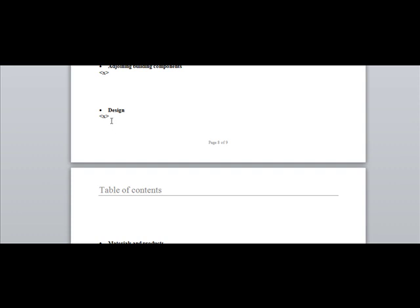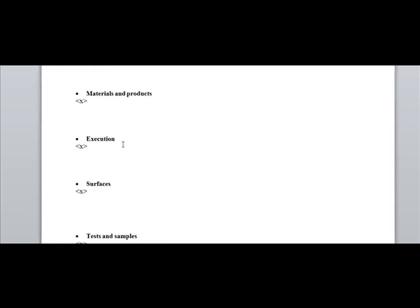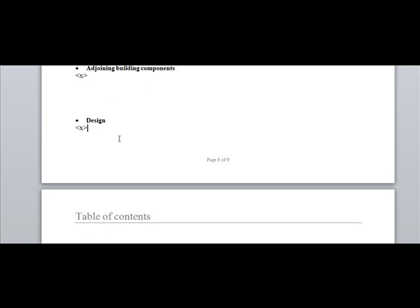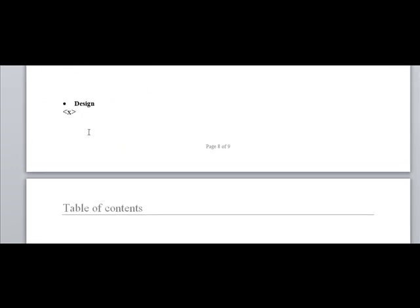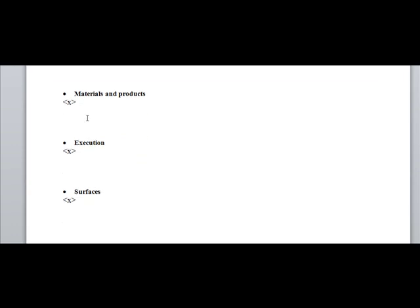There is also a section on design work, which may seem strange for site workers, but in some contracts — for example a ventilation contract — the ventilation contractor may need to provide some design input, such as the routing of pipes and ducts, because the architect hasn't done it. The materials and products must again be mentioned in chronological order, as discussed.